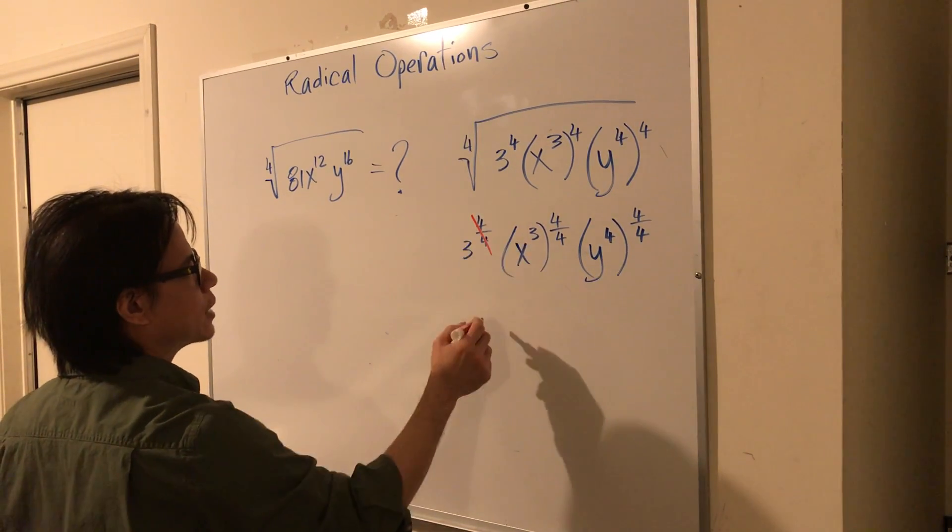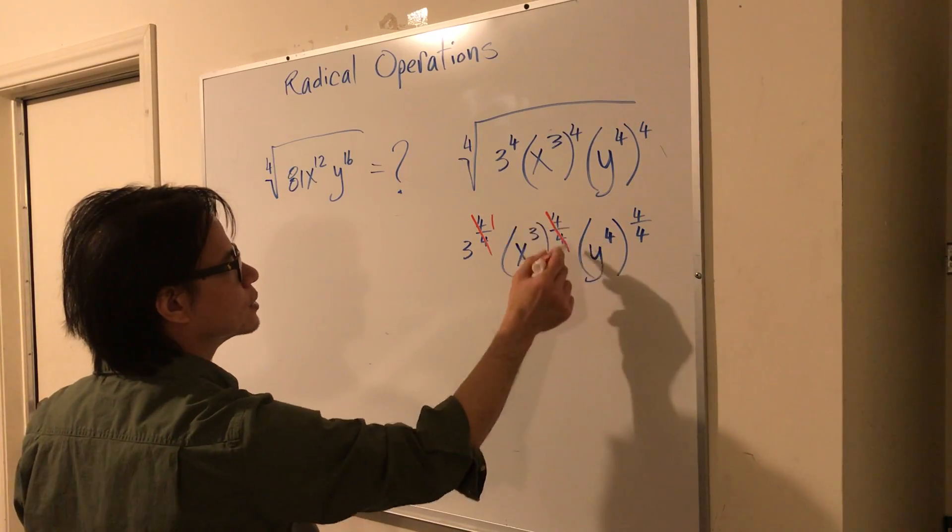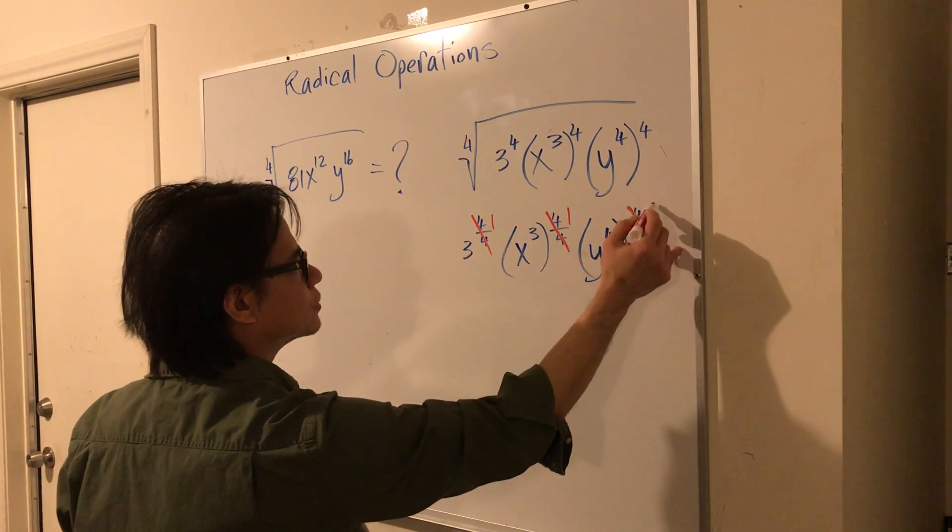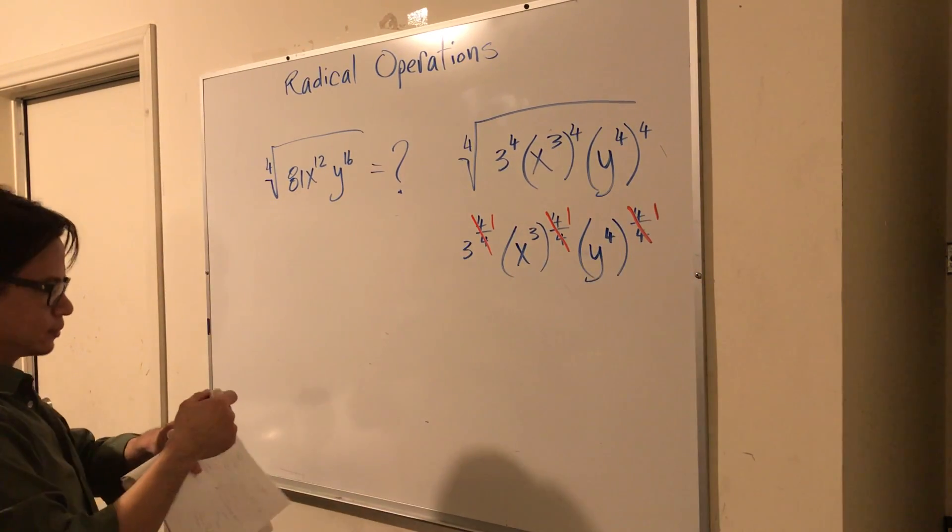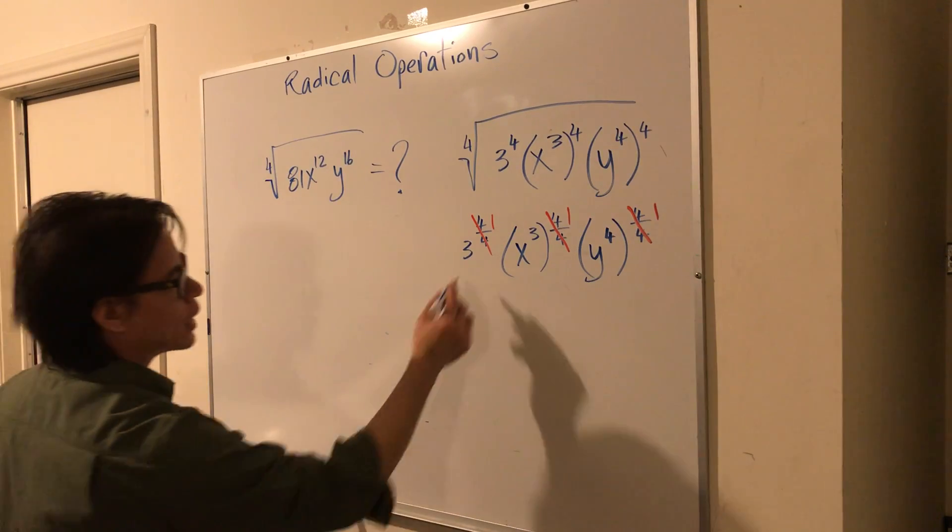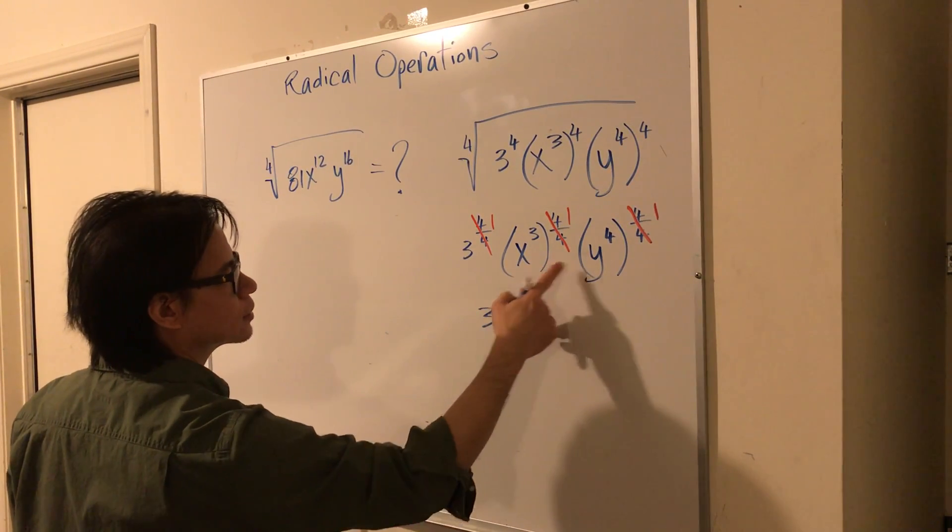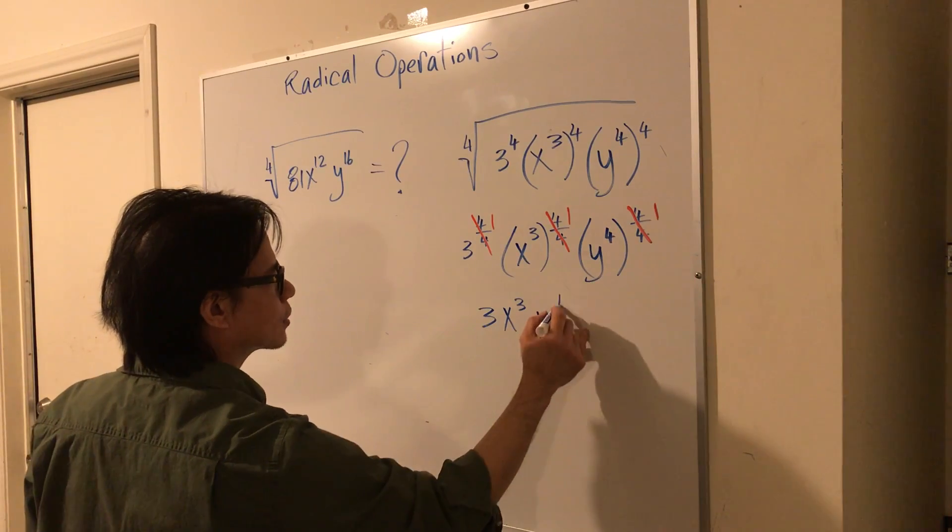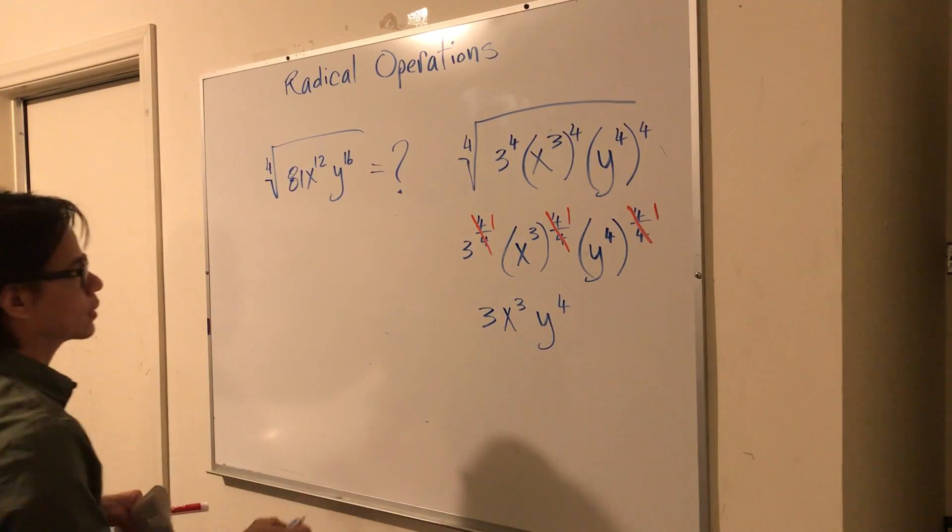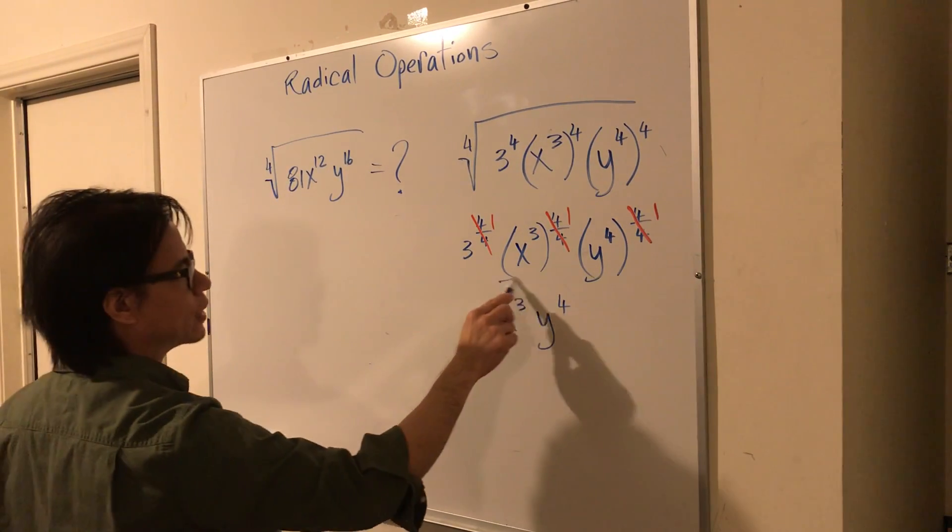So, if this cancels become a 1, and so does this, and this also, ultimately we have 3, x to the 3rd, y to the 4th. That's our final answer.